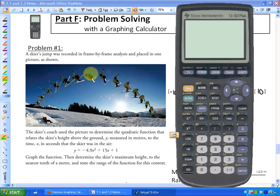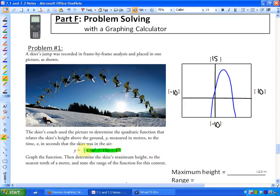So here's the quadratic function that represents this path right here of the particular skier. And you can see that it kind of models a quadratic function or parabola as it's symmetrical. First thing it says is graph the function and then it says determine the skier's maximum height to the nearest tenth of a meter and state the range of the function for this context. So the first thing we're going to do is graph this function which I've highlighted in green at this particular moment.